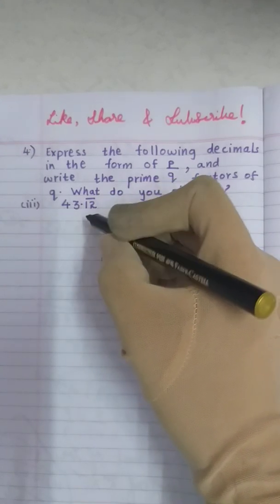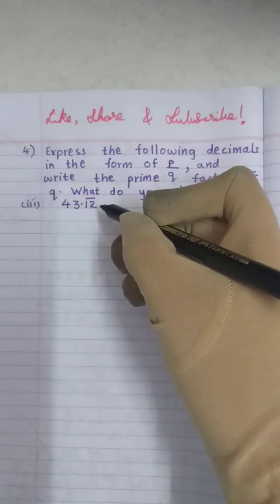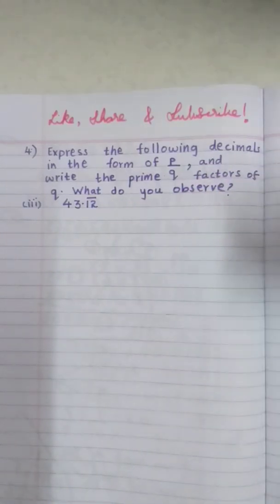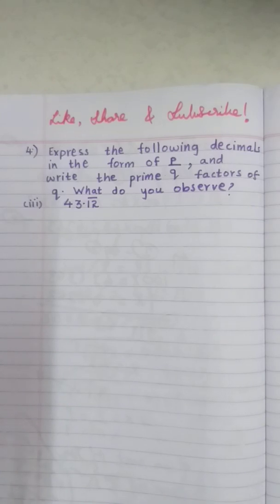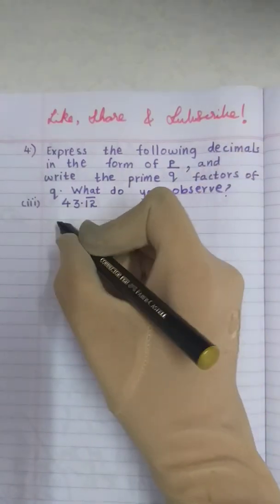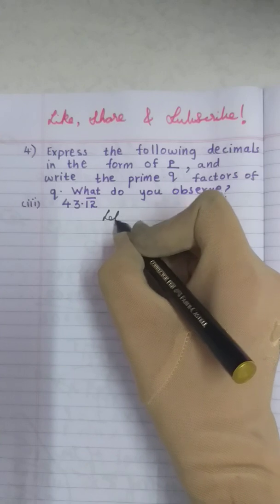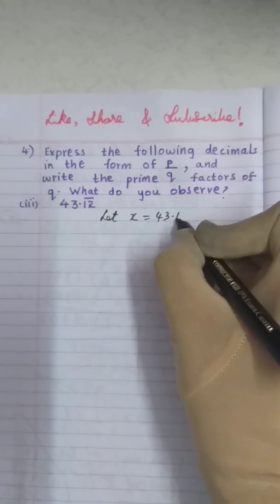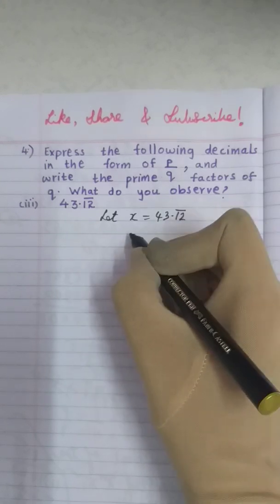43.12 bar. Remember, this bar was given to you in 8th class and 9th class also. So same concept we have to do. So first we will assume let x is equals to 43.12 bar. What does 43.12 bar mean?